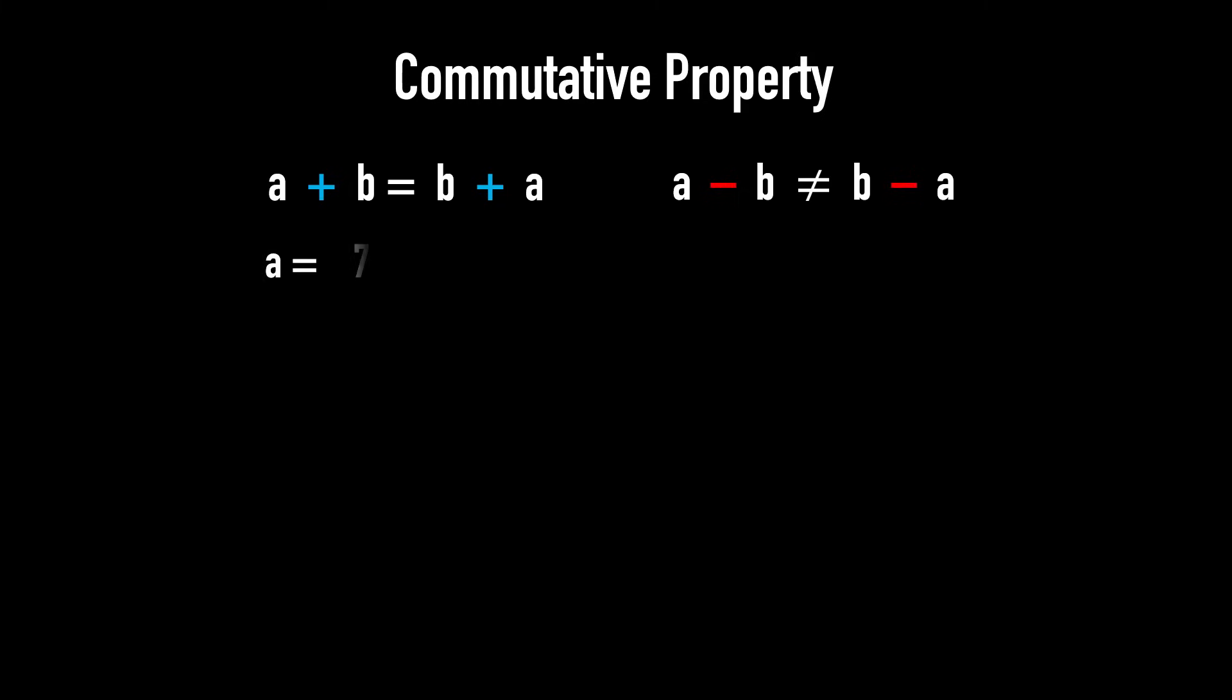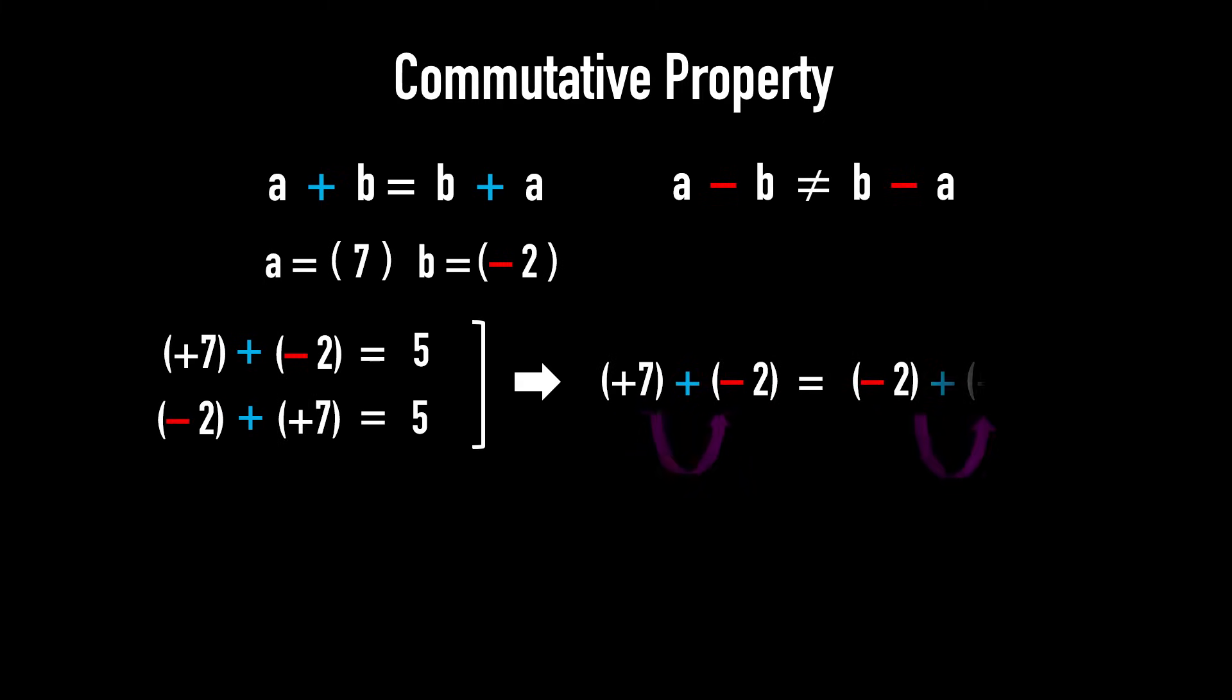Let a equals 7, and b equals minus 2. Because of the minus sign, we place both numbers in parentheses to clearly separate the signs of the numbers from the operation sign. 7 plus minus 2 equals 5, and minus 2 plus 7 equals 5. So, 7 plus minus 2 equals minus 2 plus 7. The commutative property still holds.